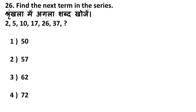Next question: find the next number in the series — 2, 5, 10, 17, 26. The differences are 3, 5, 7, 9 — increasing by 2 each time. So the next difference should be 11, giving 26 + 11 = 37. Then the next difference is 13, giving 37 + 13 = 50. So the correct answer is 50.